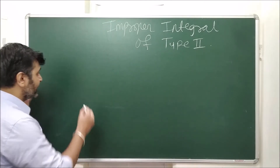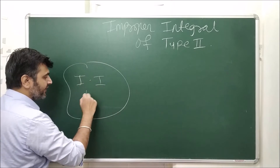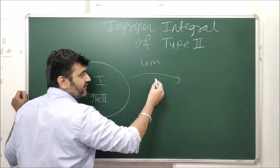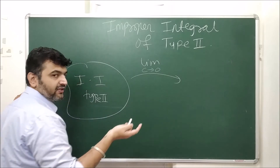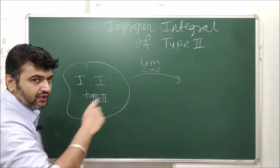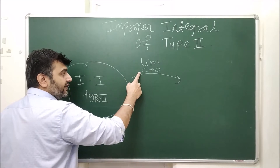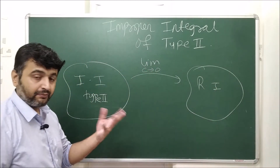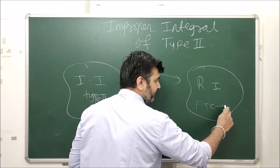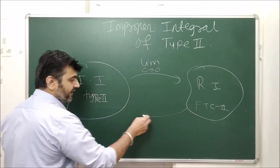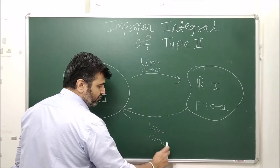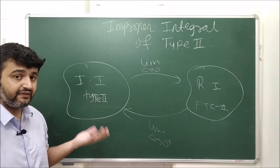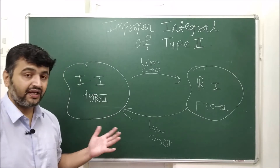The idea is the same as for improper integral type 1: you remove the problematic point, introduce the limit, and then you can apply Riemann theory. You approach c toward the problematic point — in this case 0 — and once you do that you are in the world of Riemann integration, so you can apply FTC2. Then you reapply the limit with c going to the problematic point.